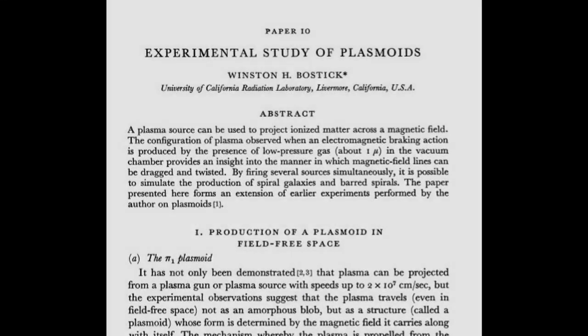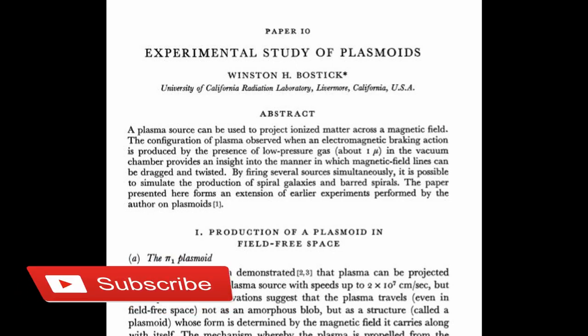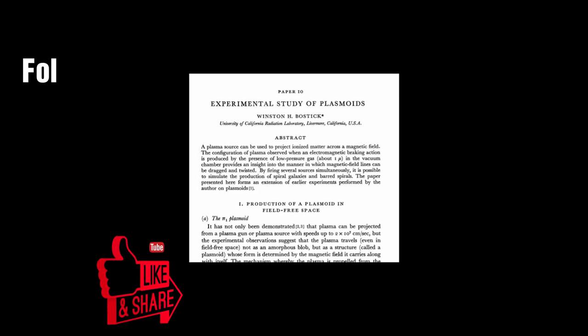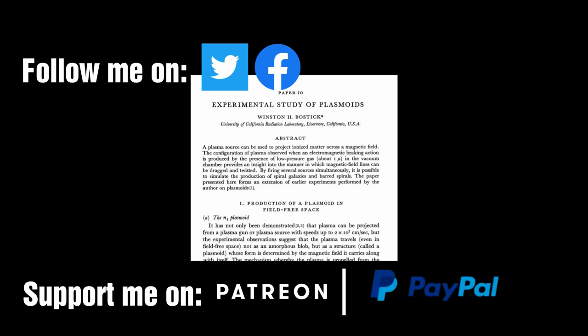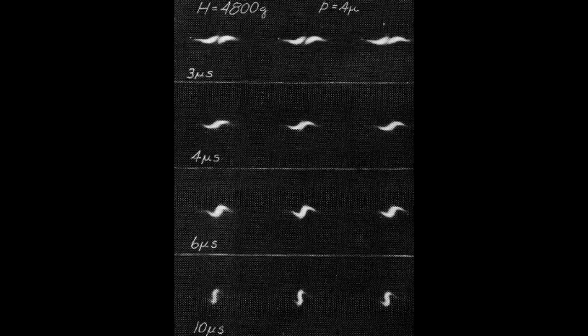The term plasmoid was first coined in 1956 by Winston H. Bostick and he used it to describe a plasma magnetic entity. He first discovered this during experiments with plasma.